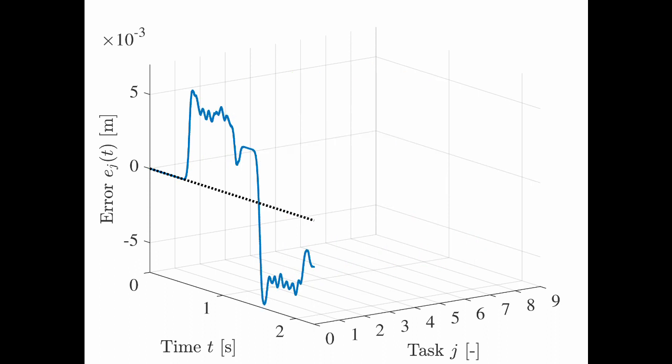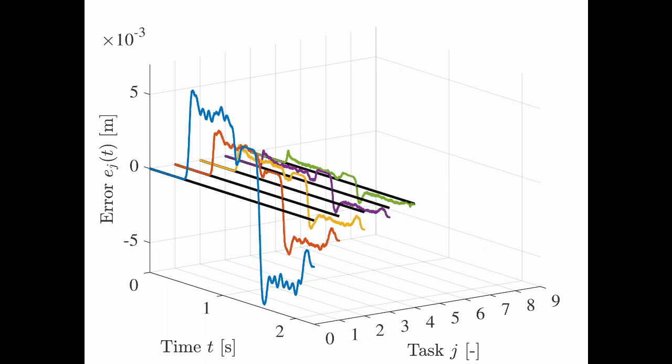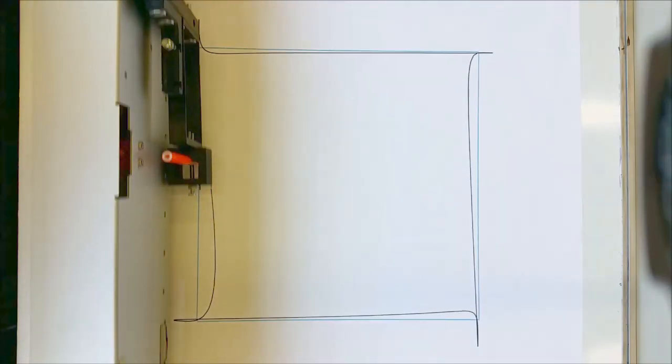By processing this data by using approximate models of the system, the error can be significantly improved within a few iterations. This is called Iterative Learning Control, or ILC for short.